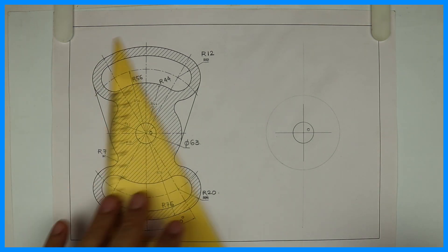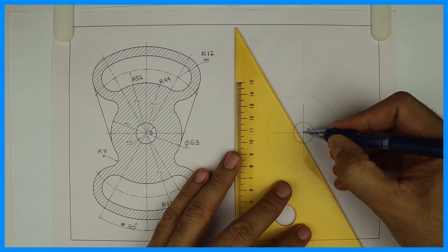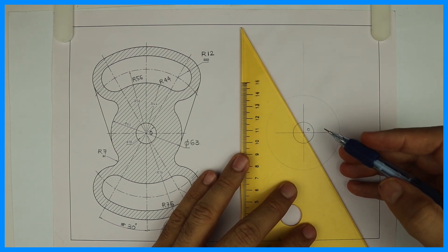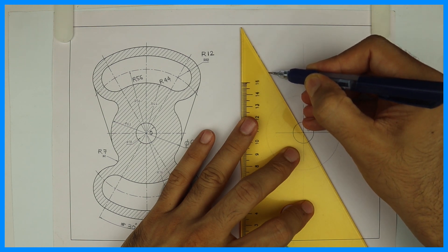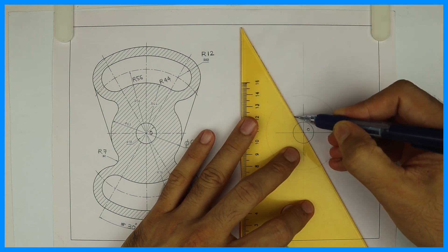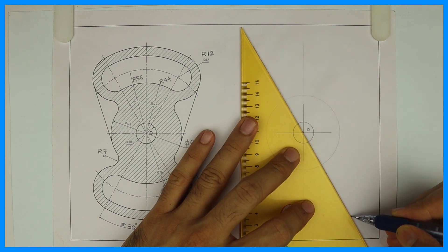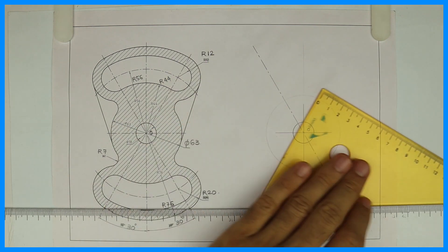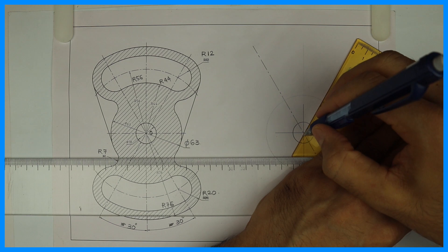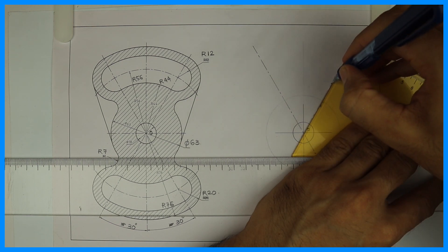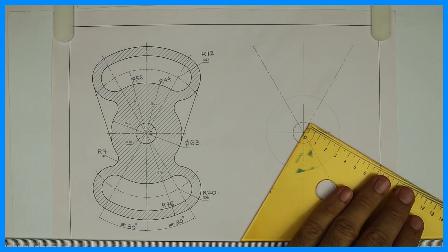So I will draw that first — 30 degrees with vertical. Same way here also, 30 degrees with vertical. So always remember whenever you start any machine drawing sum: first you draw the circles and all the angles.